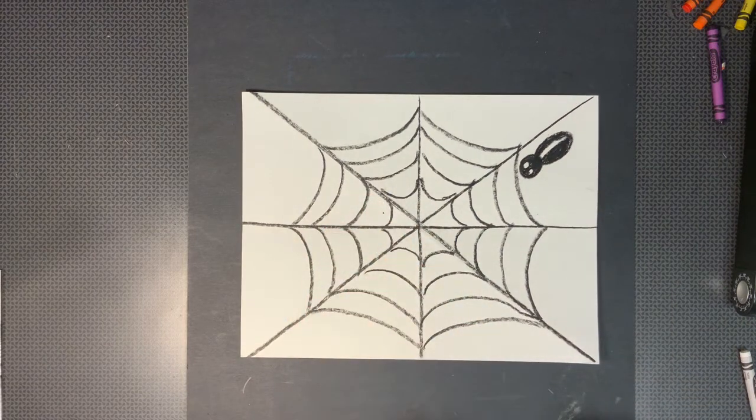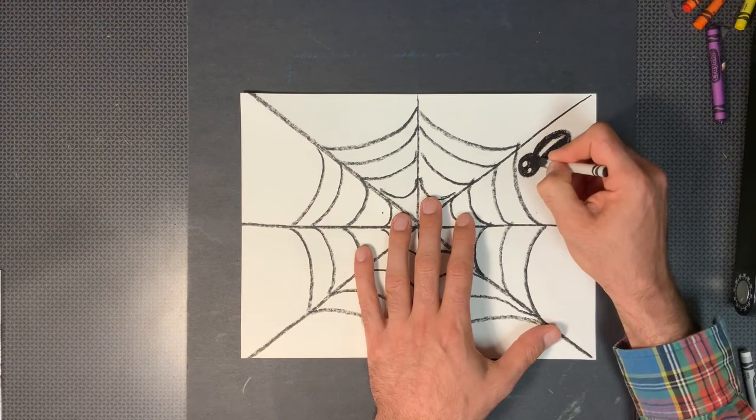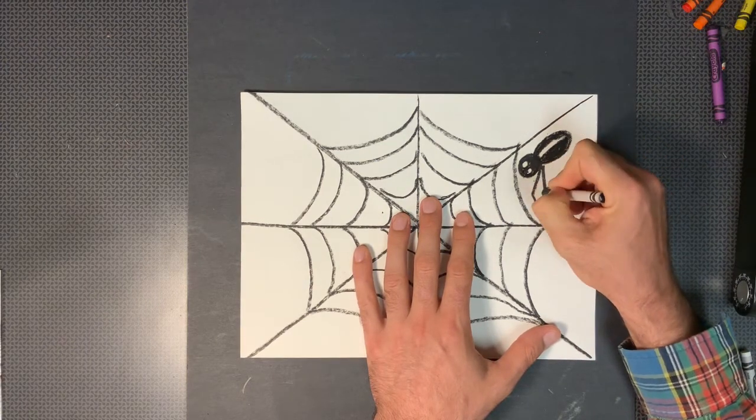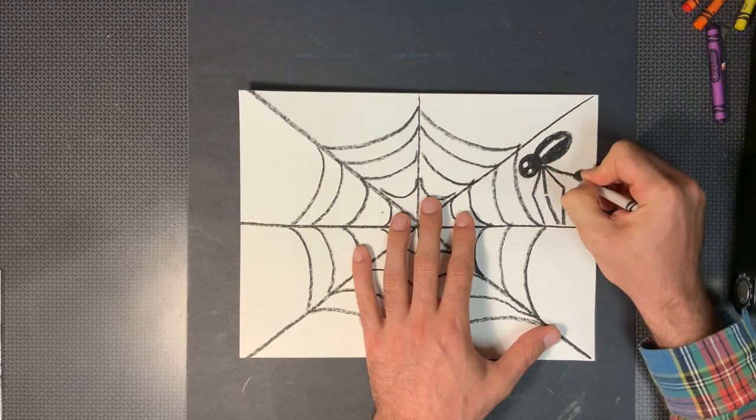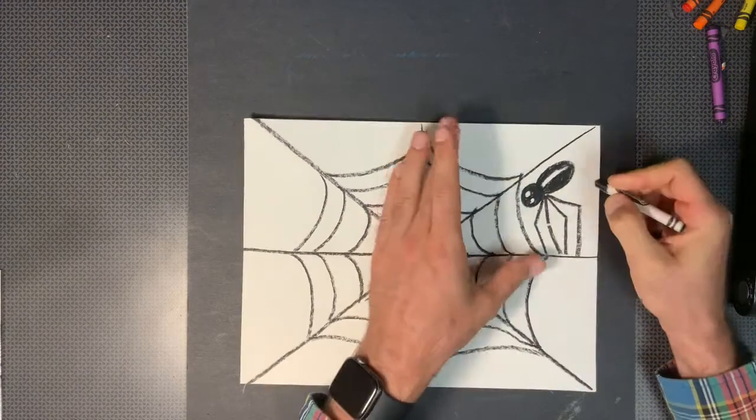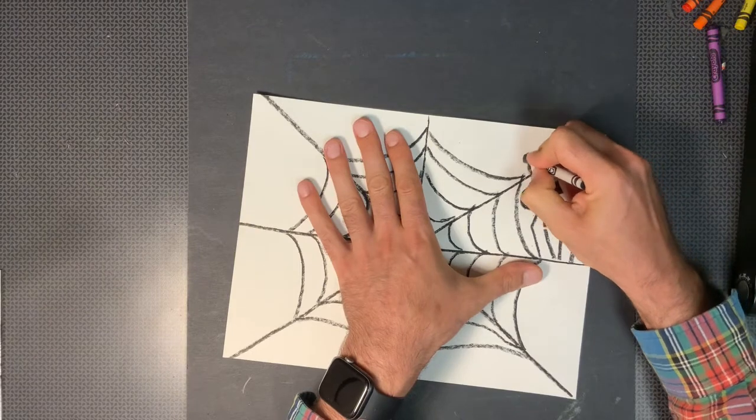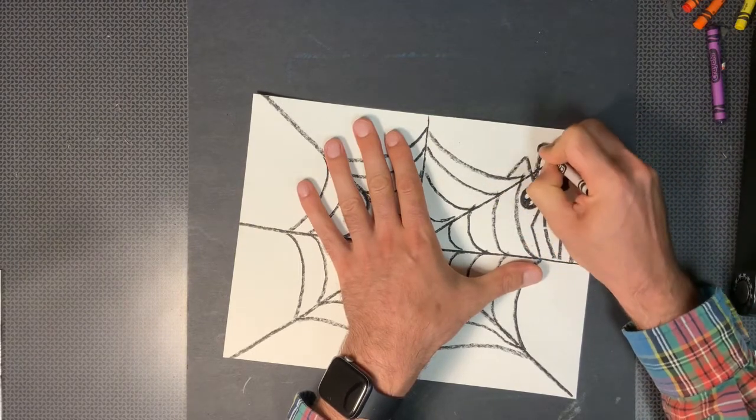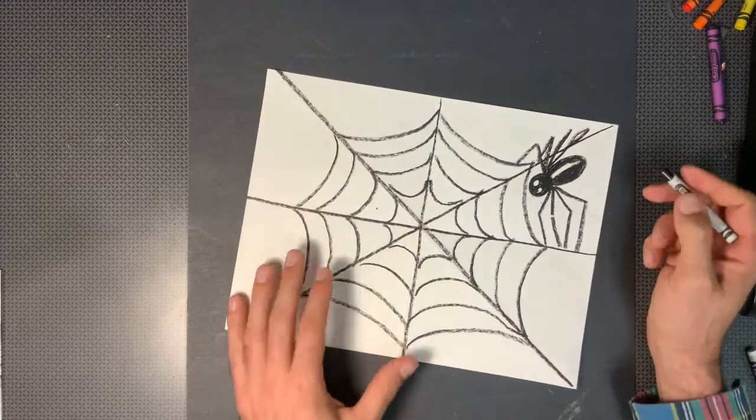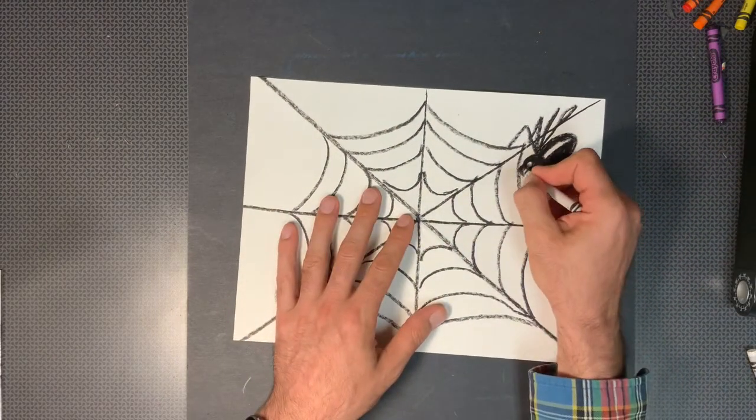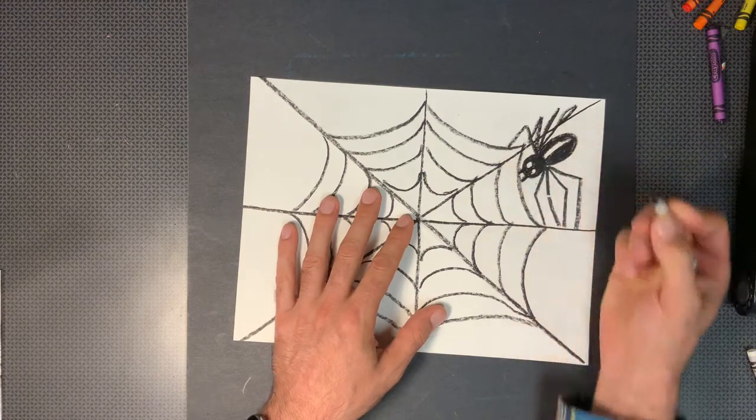Now all spiders have eight legs so I'm going to place eight legs on him. One, two, three, four. And on the other side I'm going to put four too. One, two, three, and four. So now I have my spider and spiders have little teeth like that.